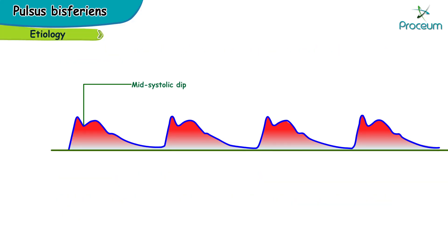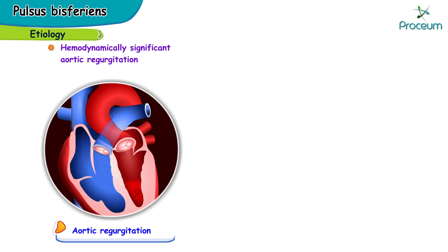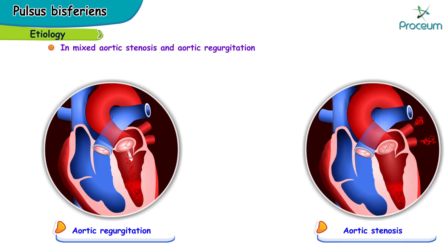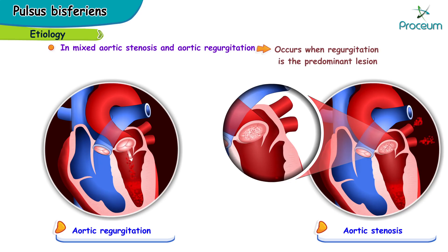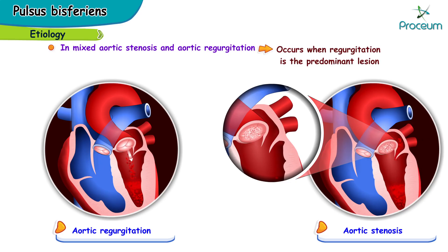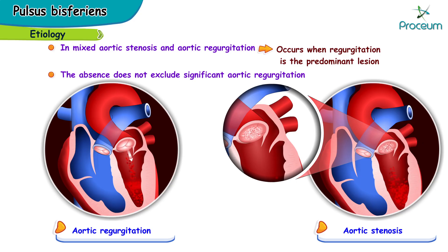Etiology of pulsus bisferiens. Pulsus bisferiens is frequently observed in patients with hemodynamically significant aortic regurgitation. In patients with mixed aortic stenosis and aortic regurgitation, a bisferiens pulse occurs when regurgitation is the predominant lesion. The absence of pulsus bisferiens does not exclude significant aortic regurgitation.